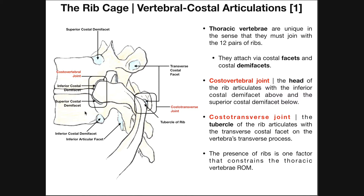Demi means half or partial — here's half of the articulation with the rib, and here's the other half. This one down here is the inferior costal demifacet, which is half of the articulation with the rib below. A costal facet, not a demifacet, refers to an articulation with only one vertebra, not shared between two. A good example is the transverse costal facet, where the tubercle of the rib articulates with just one facet on the transverse process — making it a full facet, not a demifacet.